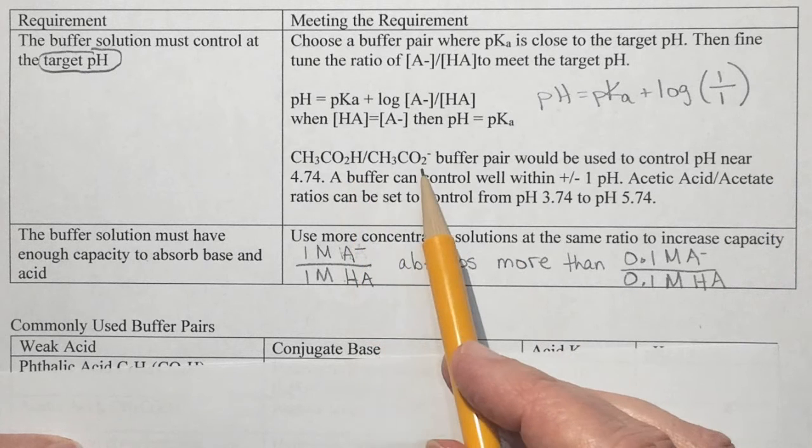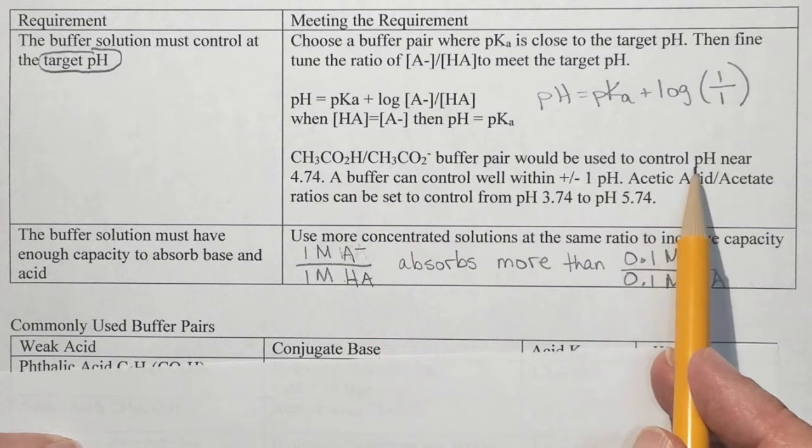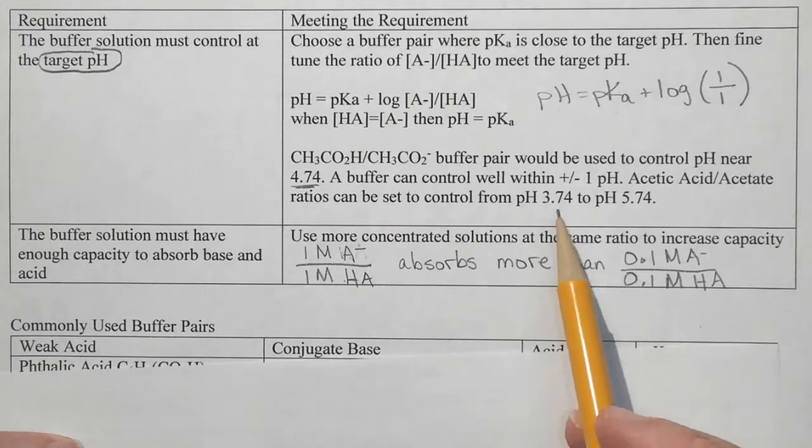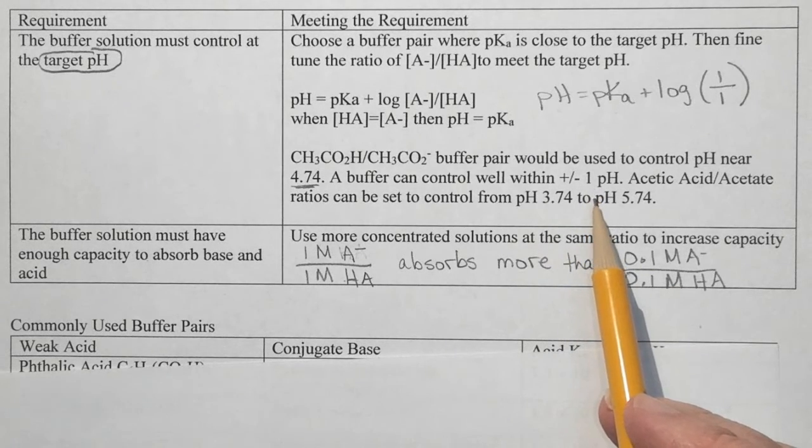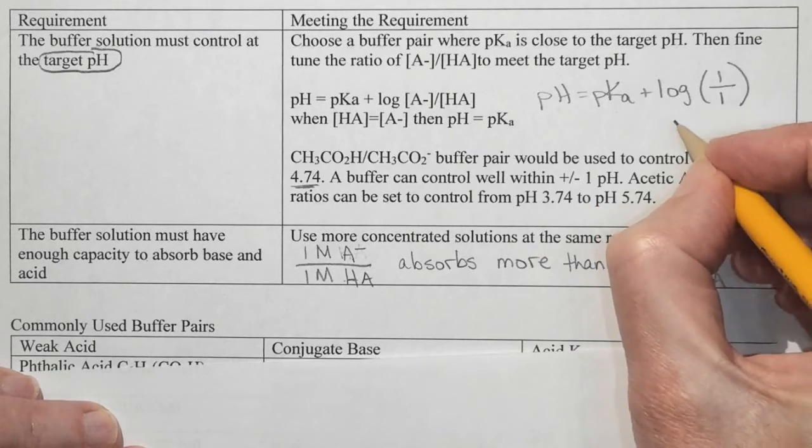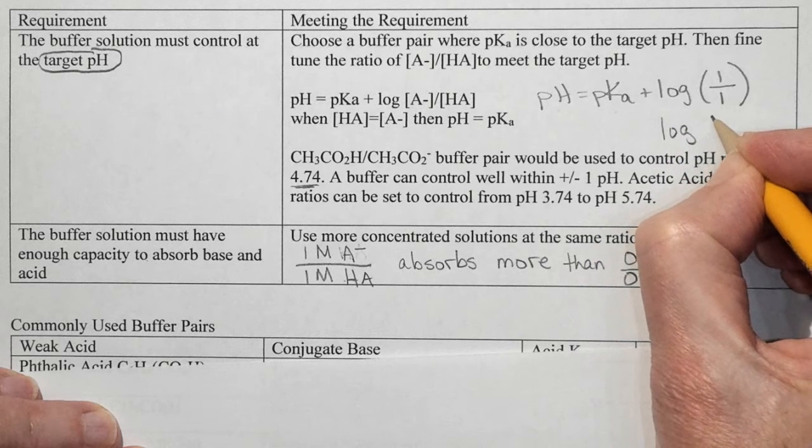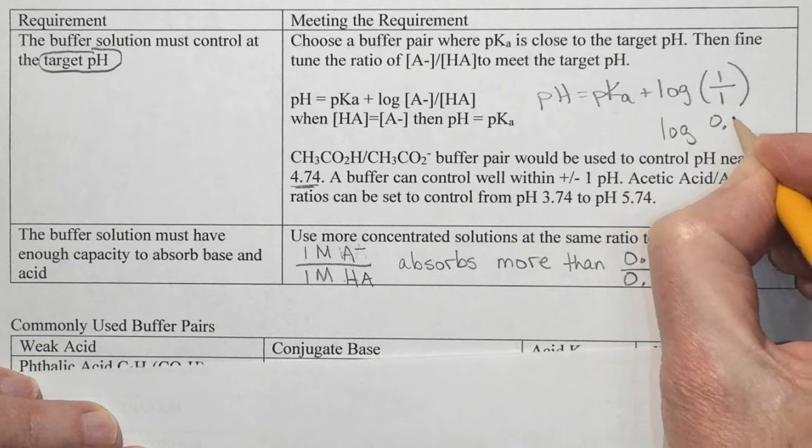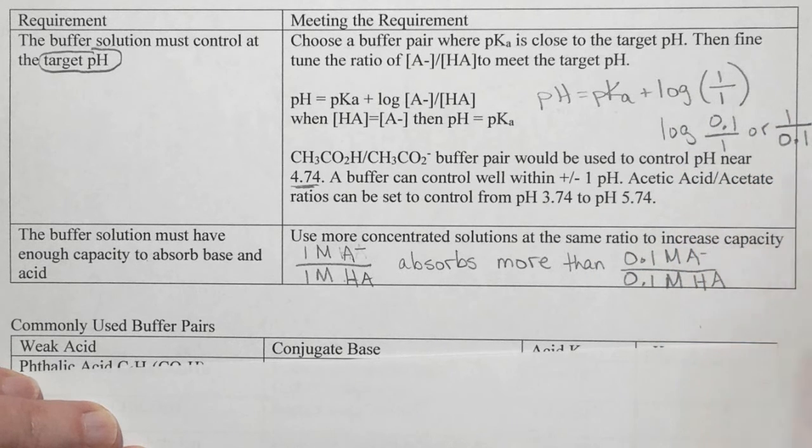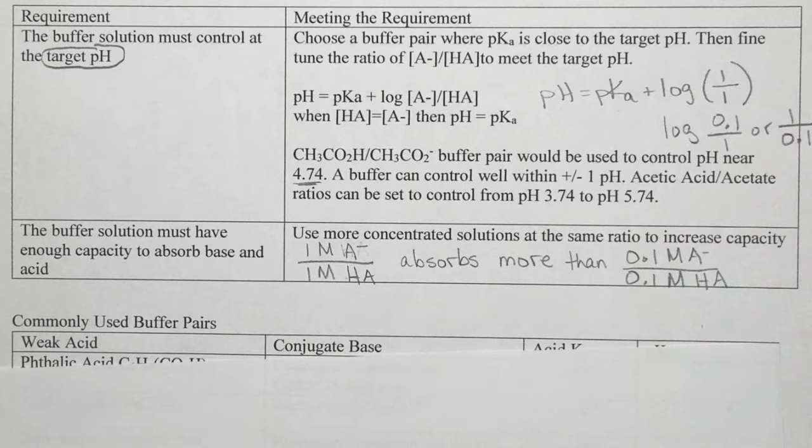So the acetic acid sodium acetate buffer pair would be used to control pH near 4.74 because that's the pKa of acetic acid. The buffer will control well as long as we're within plus or minus one pH unit. So that's where we're looking at using a log of either 0.1 over 1 or 1 over 0.1.